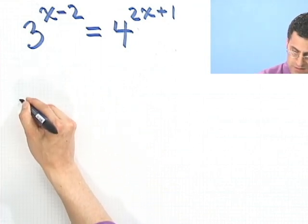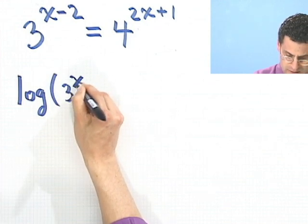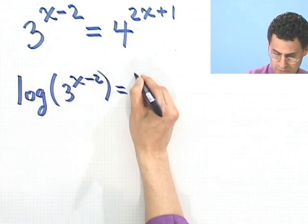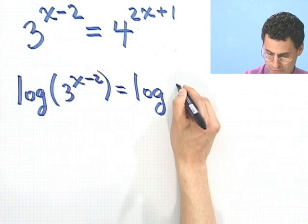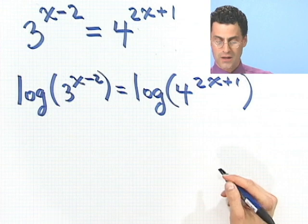So let's log both sides. So if you log both sides, do some log rolling here. We have log of 3 to the x minus 2, and that will equal log of 4 to the 2x plus 1.